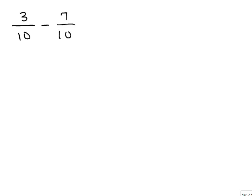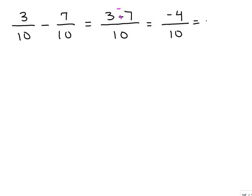Now let's do a subtraction problem with a common denominator: 3 tenths minus 7 tenths. You write the denominator down and compute 3 minus 7. Remember, that's 3 plus negative 7, which gives negative 4 for the numerator — so negative 4 tenths. A negative divided by a positive is negative. Reducing 4 tenths by dividing numerator and denominator by 2 gives negative 2 fifths. So sometimes when you subtract with common denominators, you get a negative number.